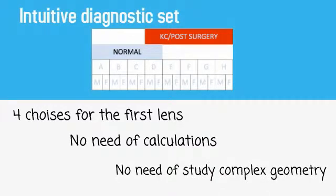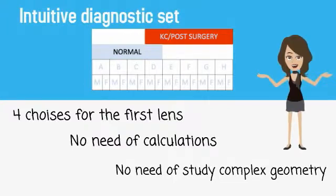Diagnostic lenses use letters instead of long numbers for the elevation increments. You pick the first trial lens from four options. You move the lens fit towards and away from the cornea using letters instead of numbers. You choose the scleral zone fit from easy-to-understand two design options.